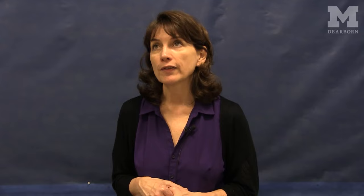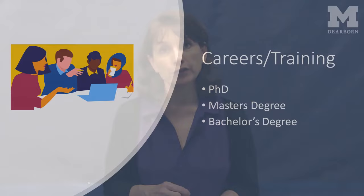Next I want to mention what you can do with your degree. You can have a PhD, which is more of a research degree. If you're going to get a PhD, really think about whether you like research and whether you want to work in a university setting, because a PhD is really teaching you how to be a researcher. PhD programs in industrial psychology are very competitive and difficult to get into — I'm not trying to discourage you, but just want you to know that going in.